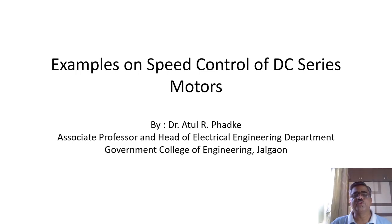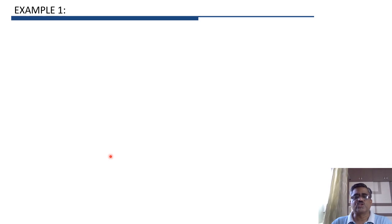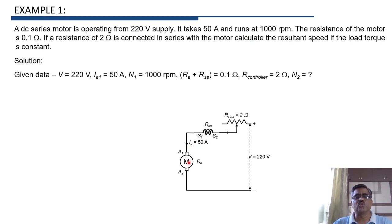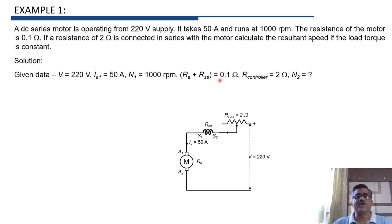Let us now solve a few numerical problems on speed control of DC series motors. In Example 1, a DC series motor is operating from a 220 volt supply, so V equals 220 volt. It takes 50 ampere and runs at 1000 rpm. The current drawn by the motor is 50 ampere, flowing through both the armature and series field winding. The total resistance of the armature circuit, Ra plus Rse, is 0.1 ohm.